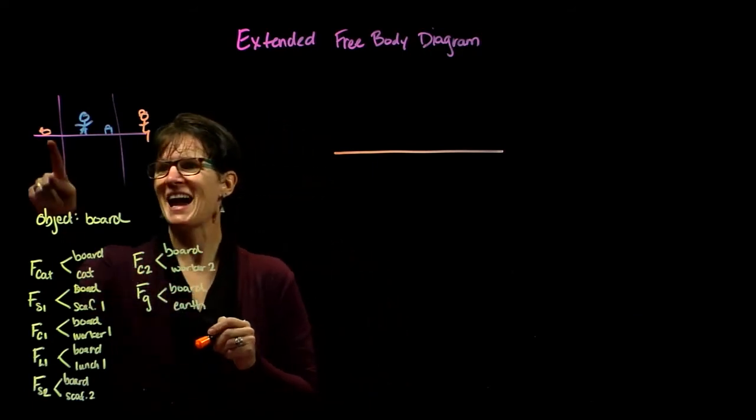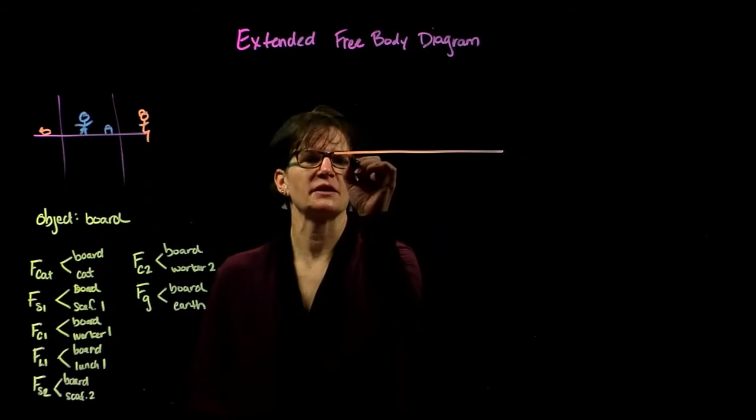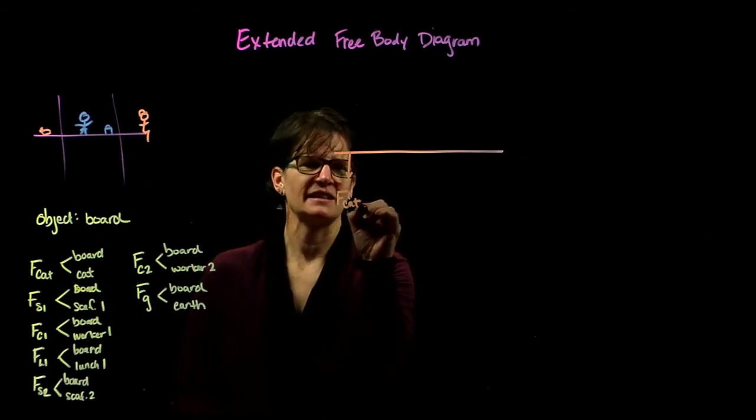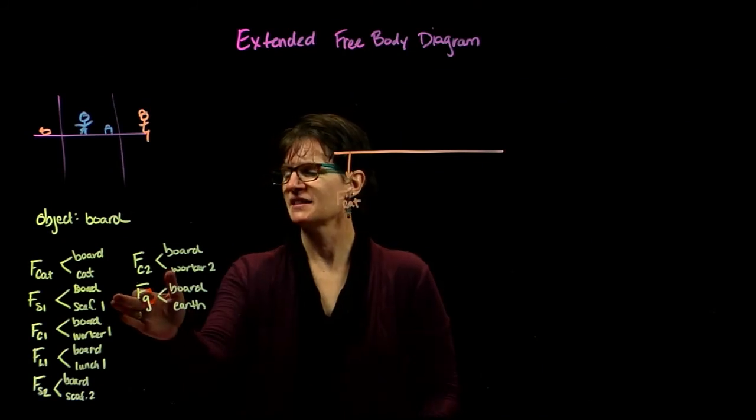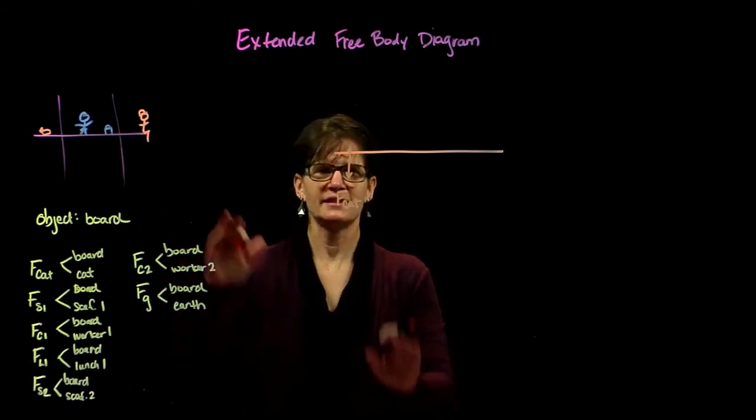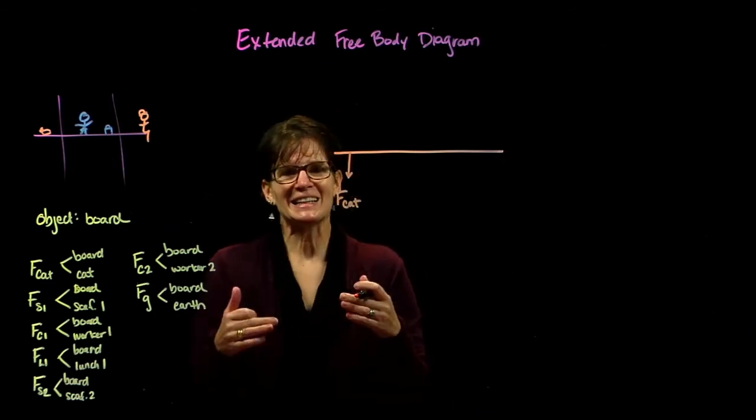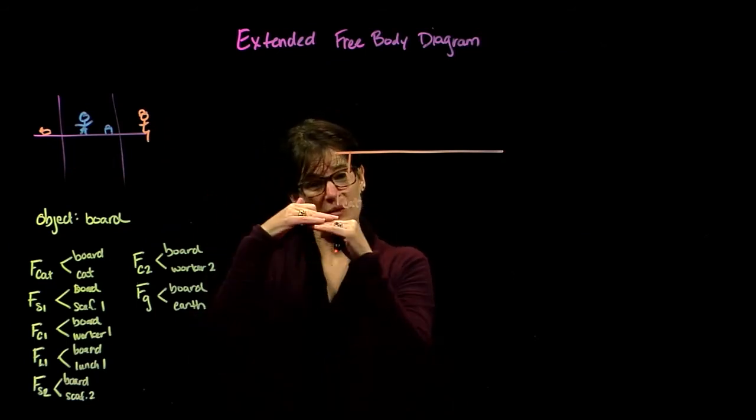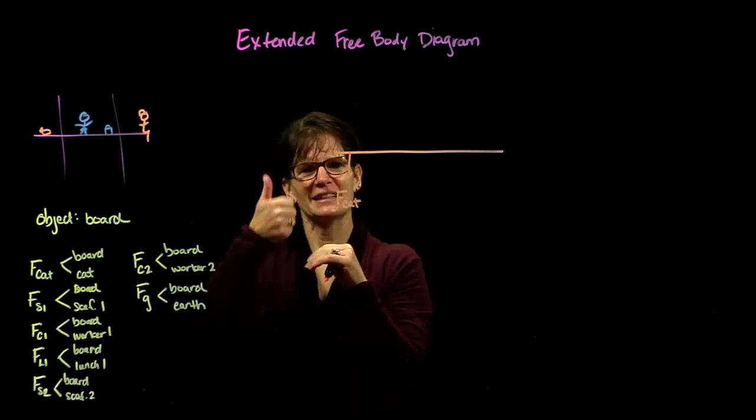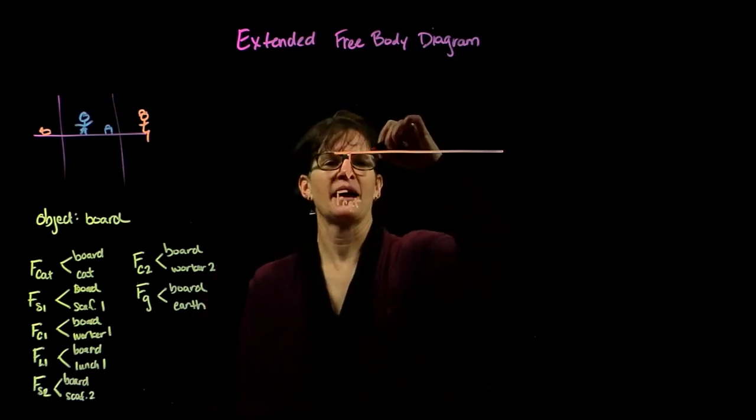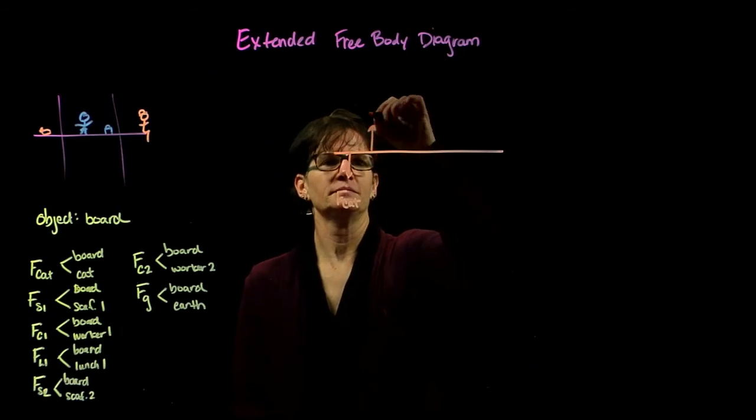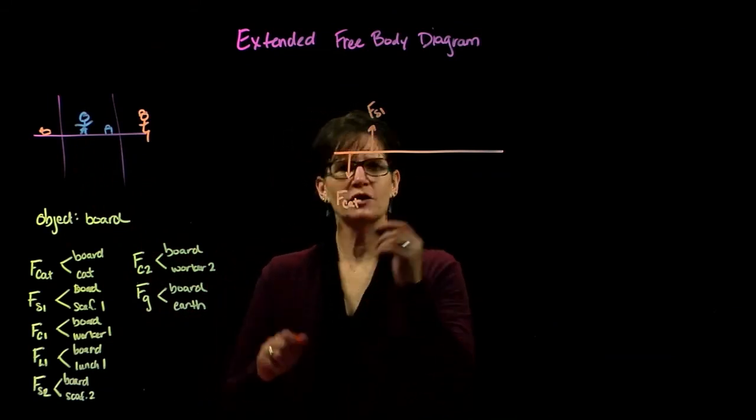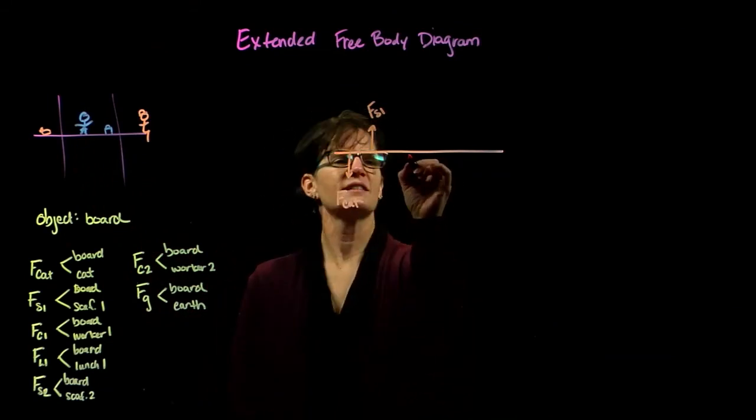We then simply place the forces where they exist on that object. So the force of the cat is close to the end of the object. We'll say the force of the cat is acting there. We then have the scaffolding. Well, that's just a little bit in and it's holding that board up. As the board pushes down on that scaffolding, the scaffolding pushes back up.